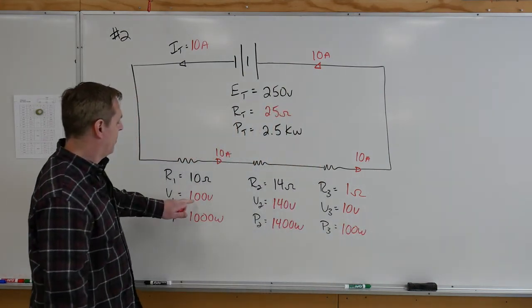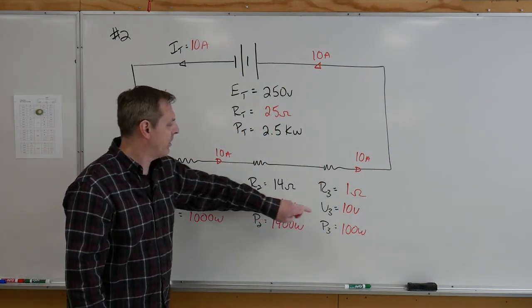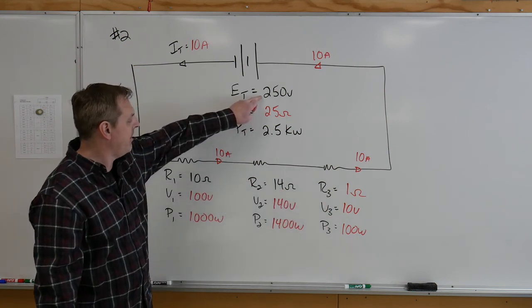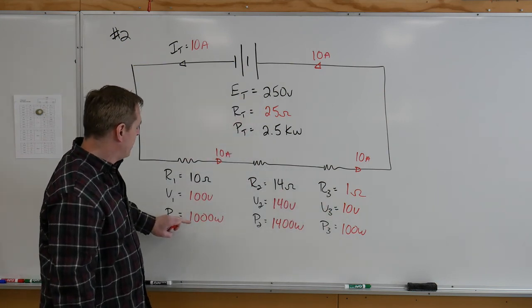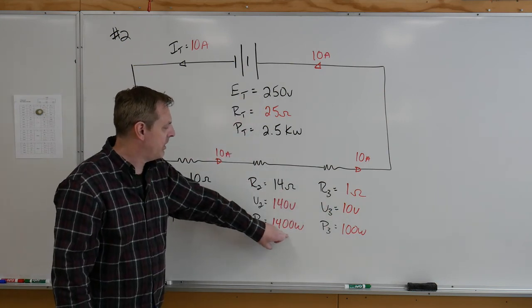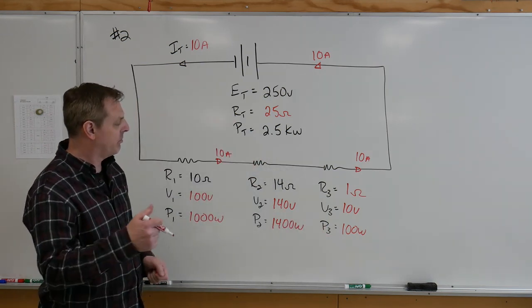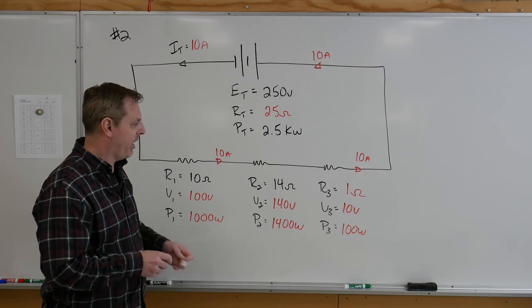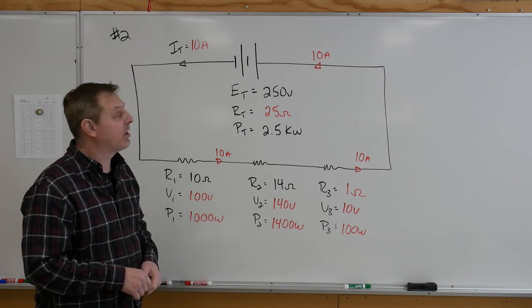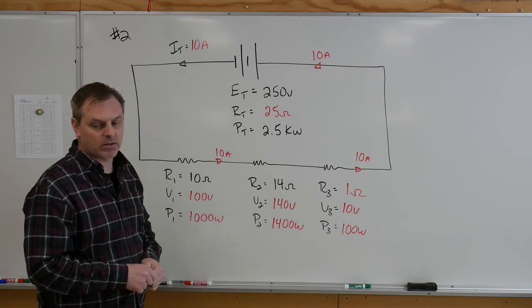Now we can add up our voltages: 100 plus 140 plus 10 giving us 250. Our powers: 1000 plus 1400 plus 100 giving us 2500. So we know everything works there. All the math is good. That was question number two from that circuit.